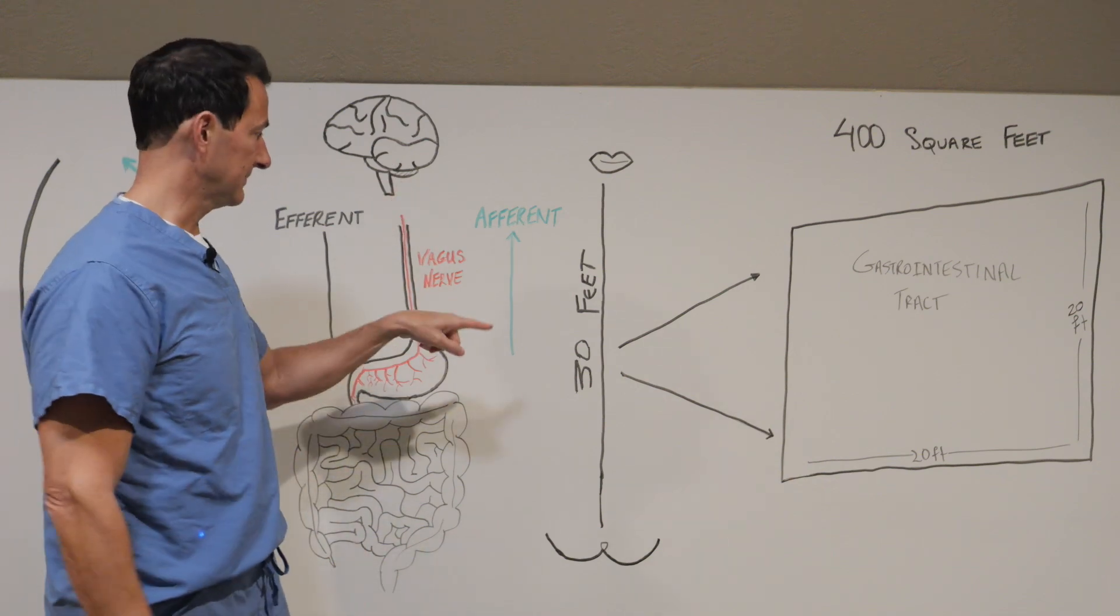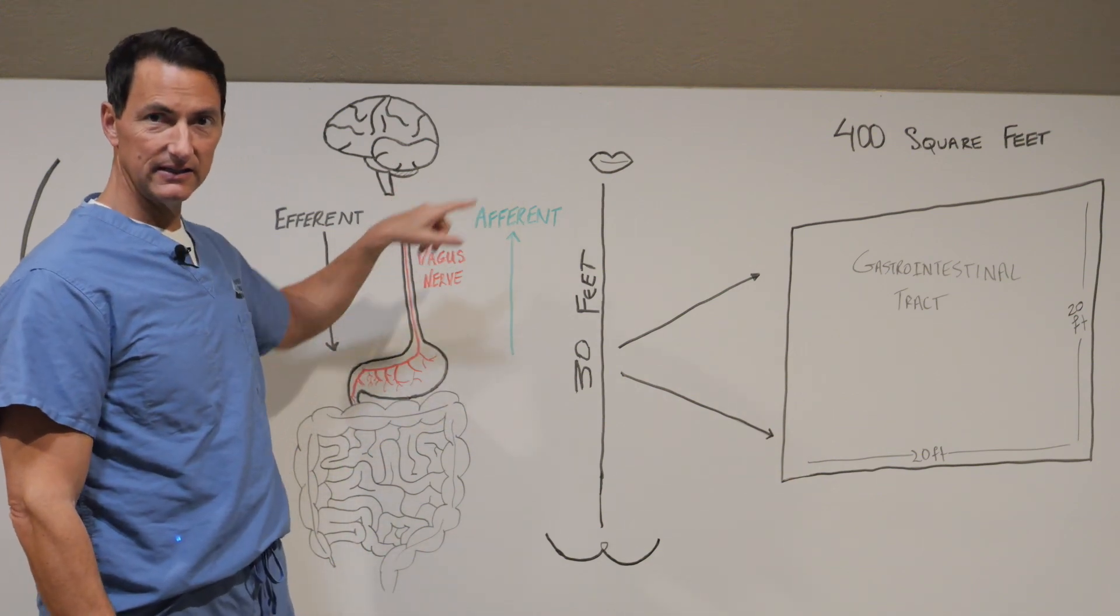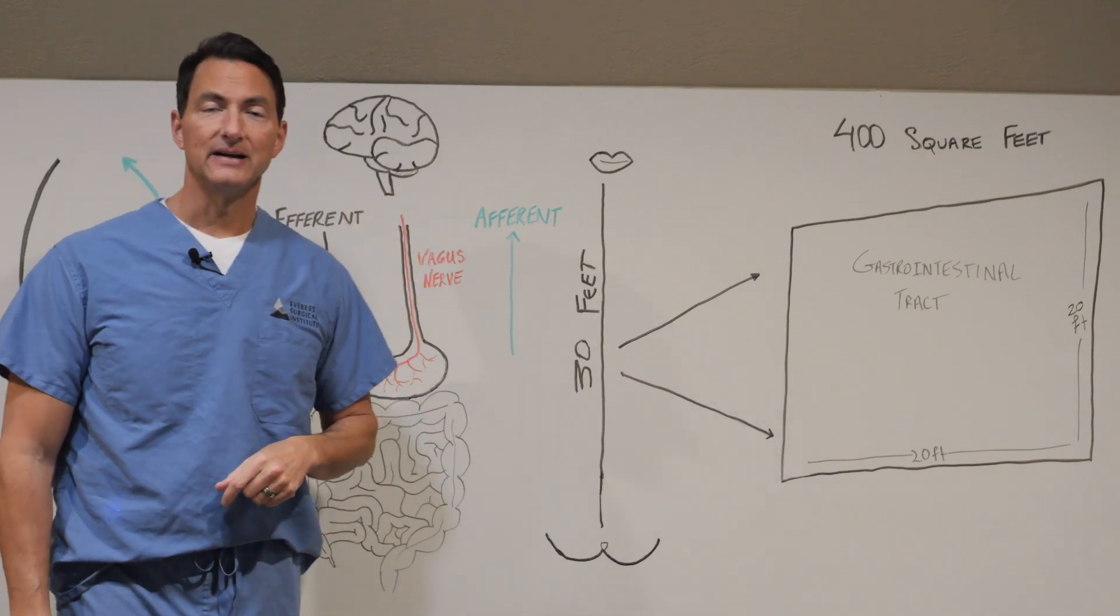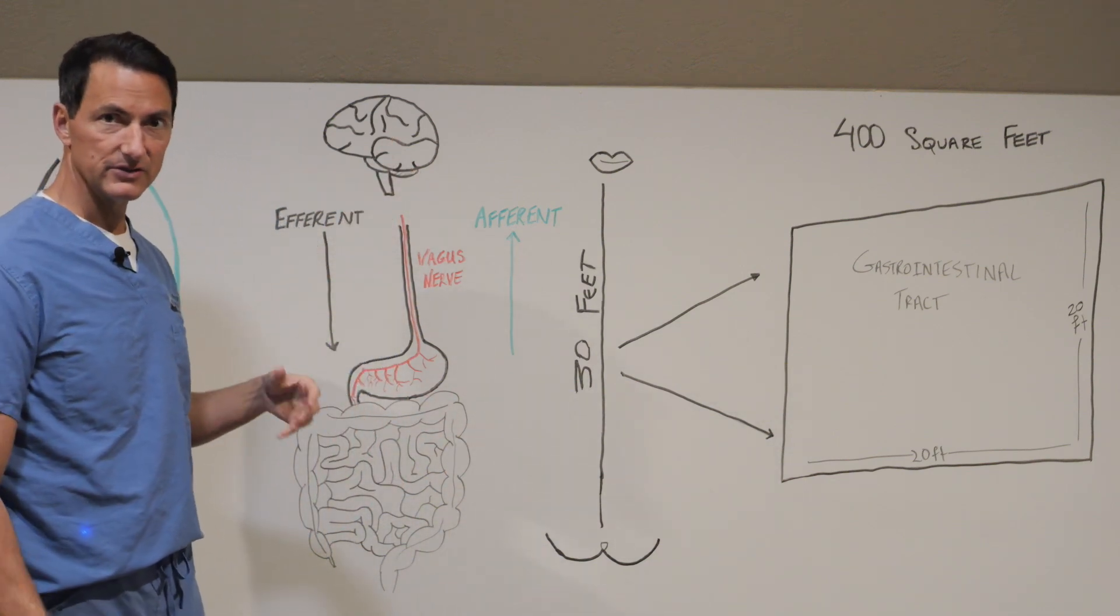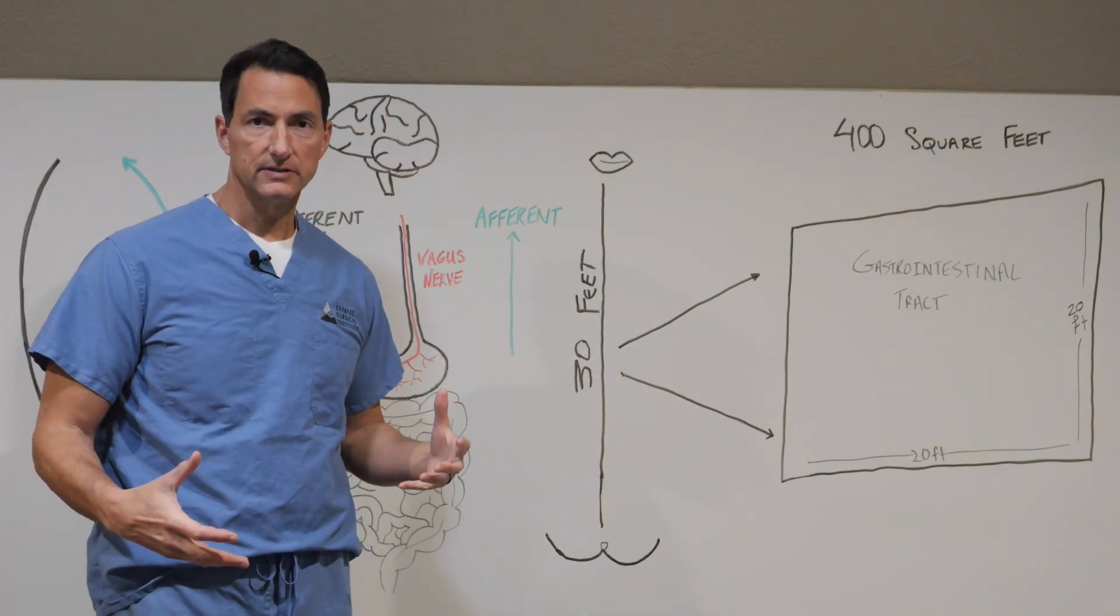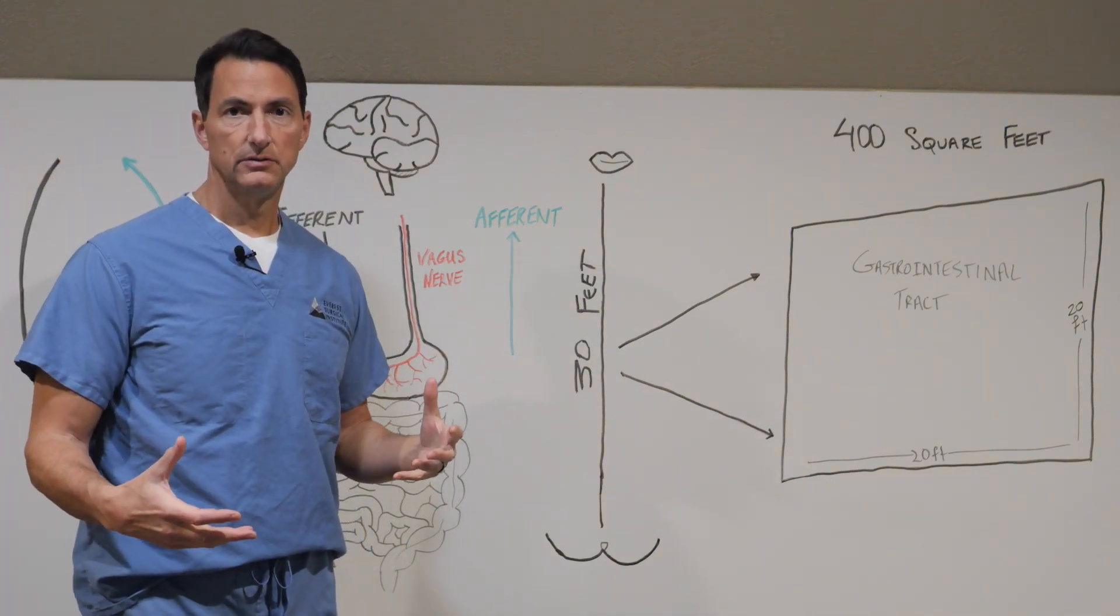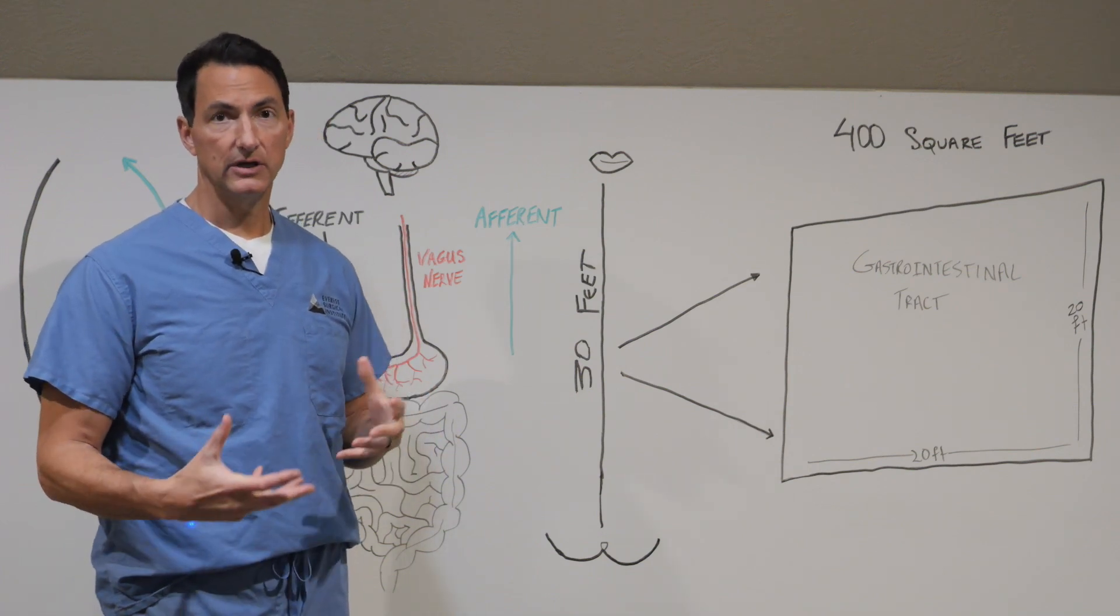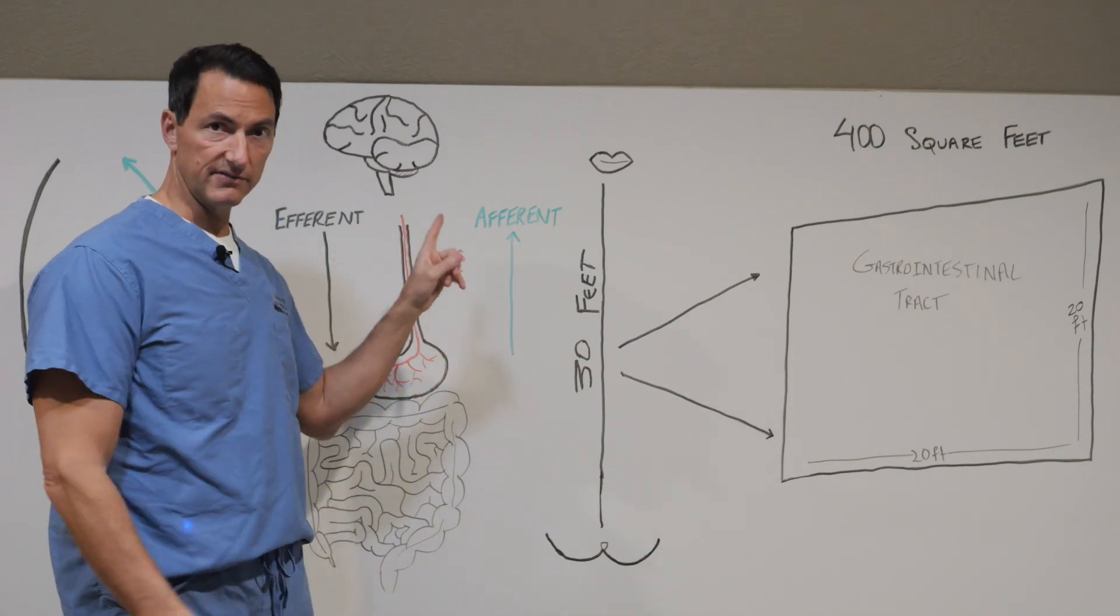And that huge surface communicates with the brain primarily through the vagus nerve. And last time we talked about afferent signaling. Those are sensory signals from the gut to the brain. And we talked about efferent signaling. Those are signals and messages from the brain to the gut.